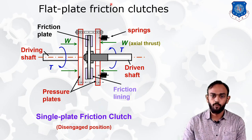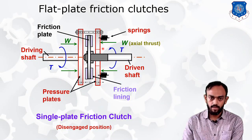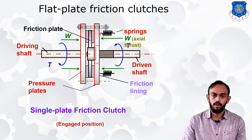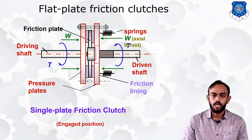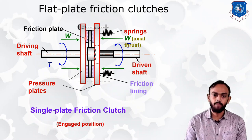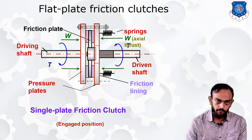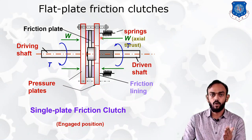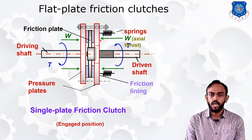We have applied force on the clutch pedal, which is why both are disengaged. When we remove that force, the spring force causes the pressure plates to engage with the friction plate on both sides. Due to the friction between them, motion is transmitted from the driving shaft to the driven shaft. When we apply force on the pedal — greater than the spring force — we break the contact between the plates.